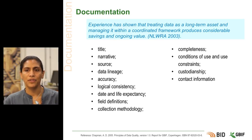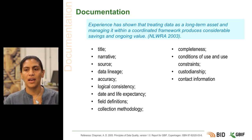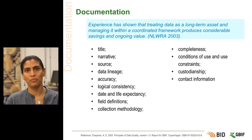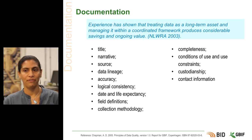A narrative should describe the rationale for the creation of the data set, and it should include general information about the scope of the data set — for example, taxonomic coverage or geographical coverage.